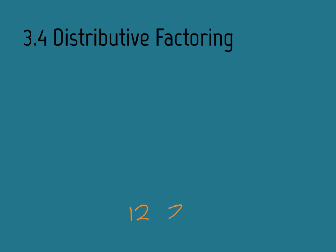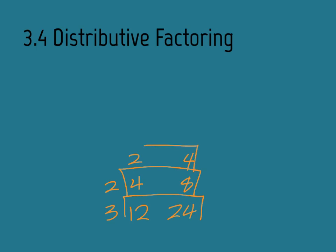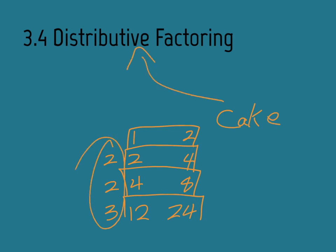So if I have 12 and 24 and I want to find the factor that goes into both of those, I could use 12, but I could also start with 3. We're going to be using the cake method to do distributive factoring today. Remember, those numbers on the outside — if we multiply them — give us our greatest common factor. And that greatest common factor can come in very handy sometimes.